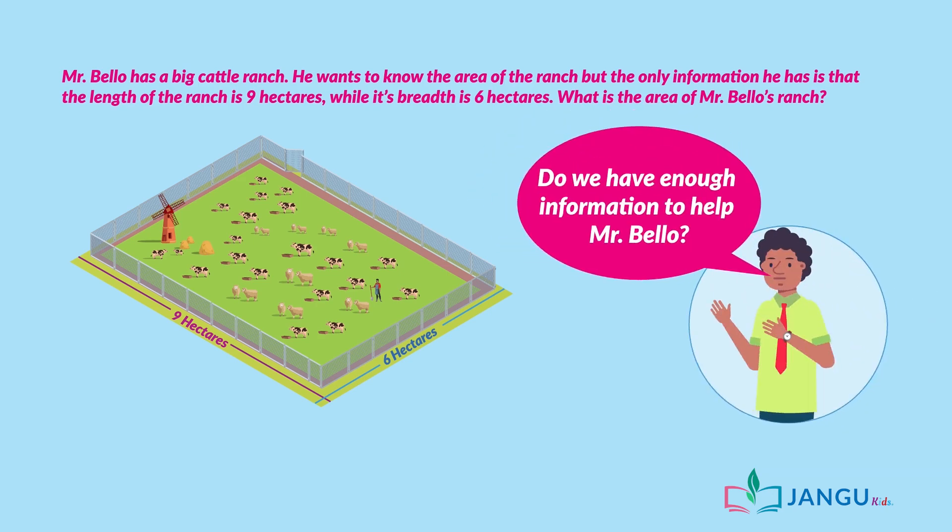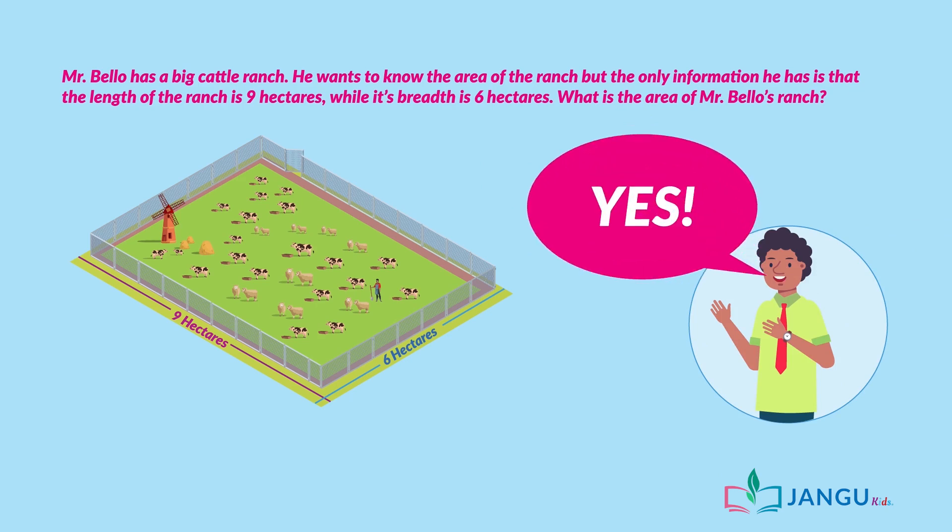Do we have enough information to help Mr. Bello? Yes, we do. From the question, we can deduce that the ranch is rectangular, because its length and breadth are different.